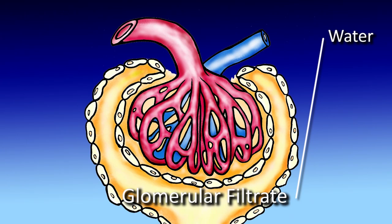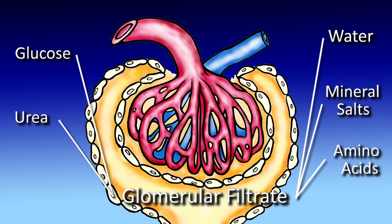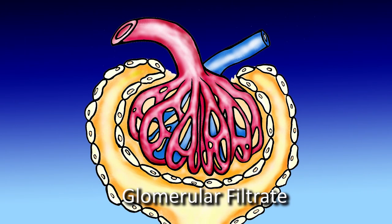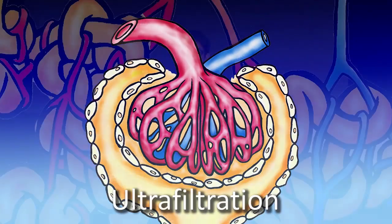The glomerulus filtrate contains water, mineral salts, amino acids, glucose, urea, and other substances, which are similar to tissue fluid. The process of formation of the glomerulus filtrate is called ultrafiltration. Then, the glomerulus filtrate passes through the proximal convoluted tubule, where absorption takes place. Substances are reabsorbed back into blood capillaries around the tubule by passive diffusion and active transport. Amino acids and glucose are reabsorbed completely, and most of the water and salts are also reabsorbed. Most urea remains and passes out as urine.